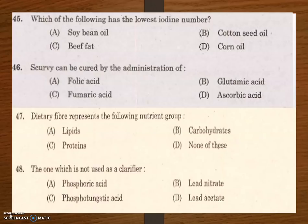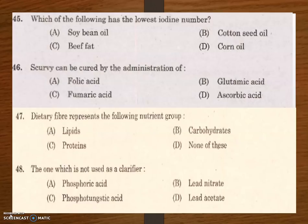Next question: scurvy can be cured by the administration of? Options are folic acid, glutamic acid, fumaric acid, and ascorbic acid. The answer is ascorbic acid. Scurvy is a deficiency disease caused by the deficiency of vitamin C, and ascorbic acid is vitamin C. So scurvy can be cured by administering ascorbic acid.